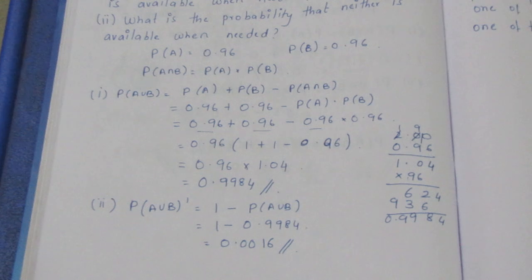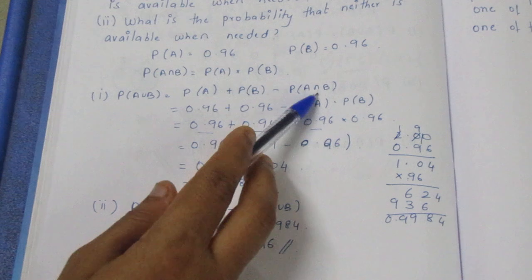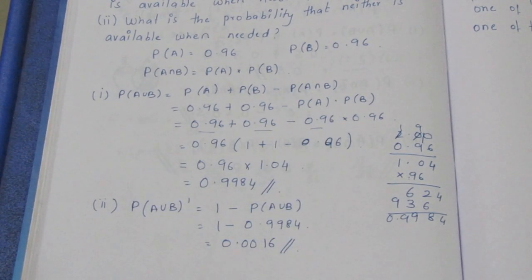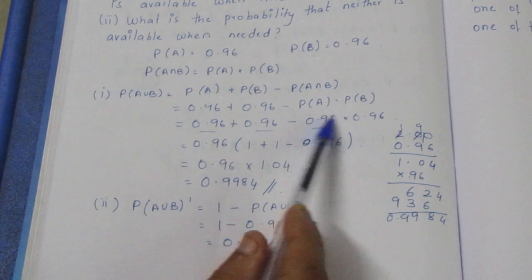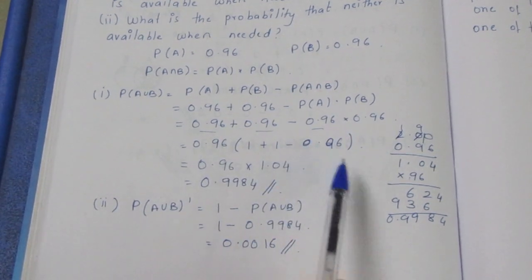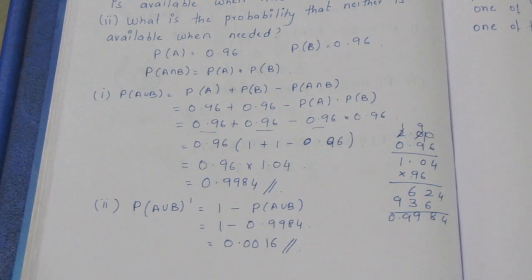To summarize: use the union formula for the available case, and the intersection formula P(A ∩ B) = P(A) × P(B) for independent events. Add, multiply, and subtract to solve it. That's it. Thank you.